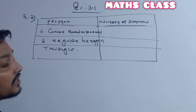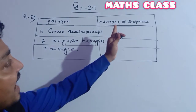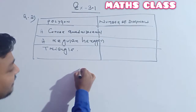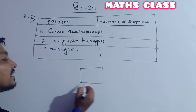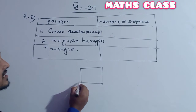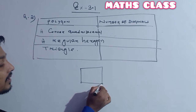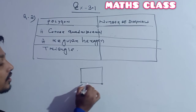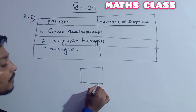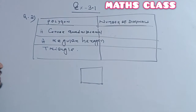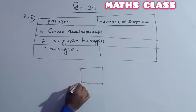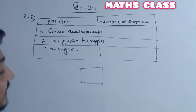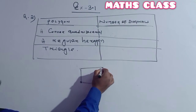Question number two asks you to find out the number of diagonals. Before solving, let me show you something. Consider a polygon — these two vertices are called adjacent vertices because both points lie on the same side, on one line segment. So these are adjacent, and these are adjacent. But this one and this one — they are not adjacent. Remember: these are non-adjacent vertices.